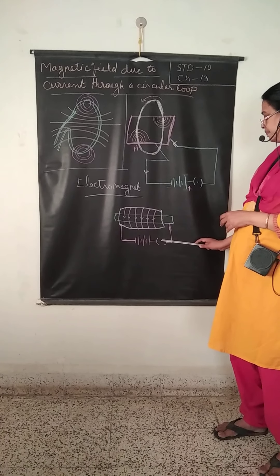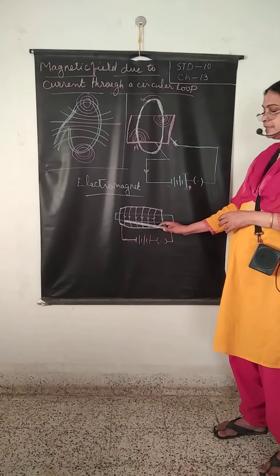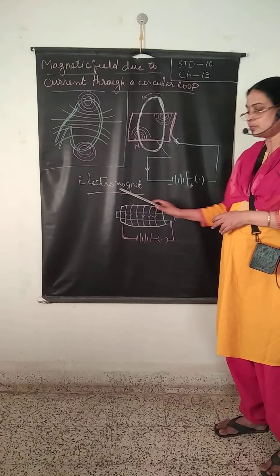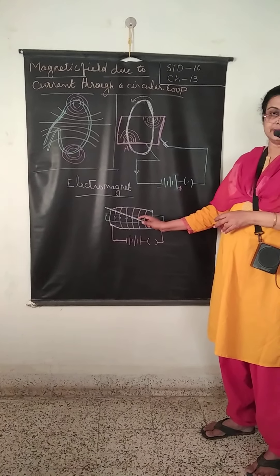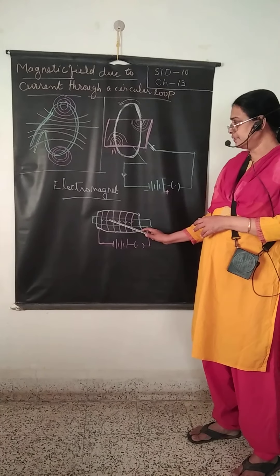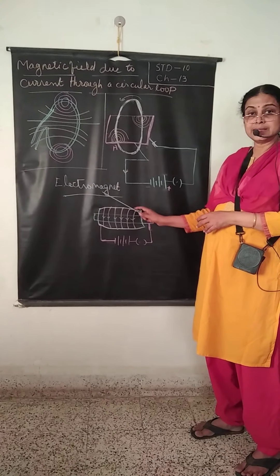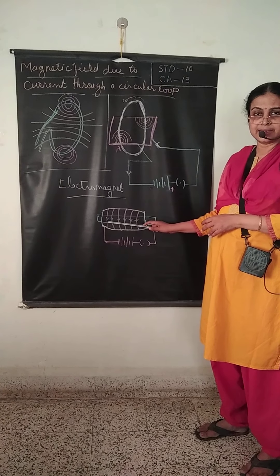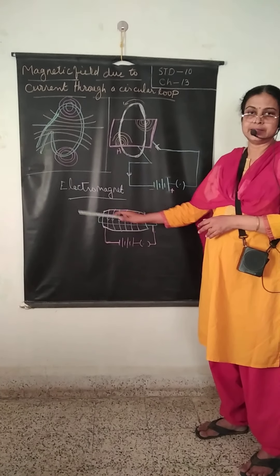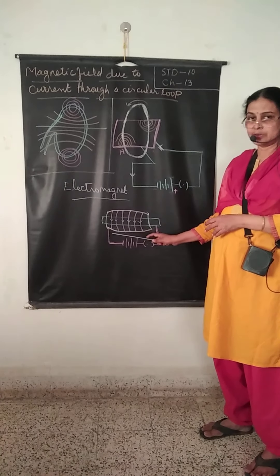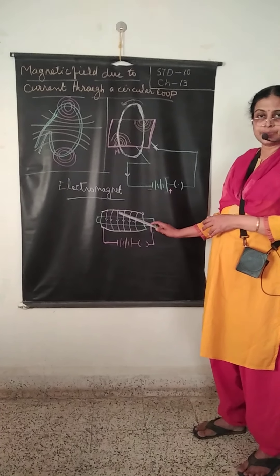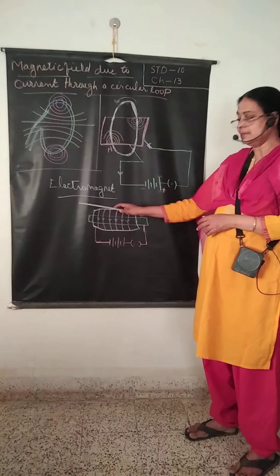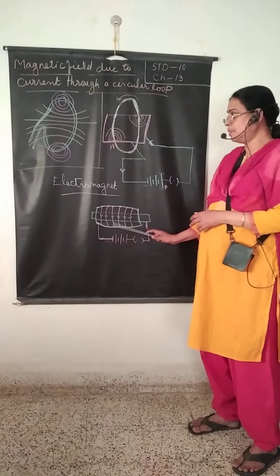When the key is pressed and electricity is passed, the solenoid acts as a magnet, which is called an electromagnet, and it can attract iron pieces. The peculiarity of this electromagnet is that it is a temporary magnet. When it loses its electric current, it loses its magnetic property.